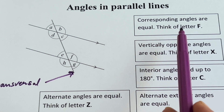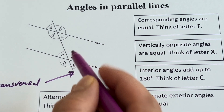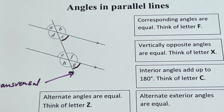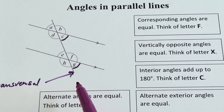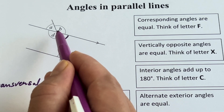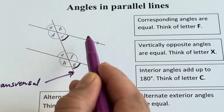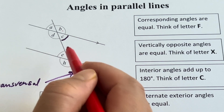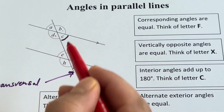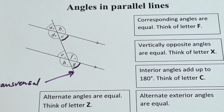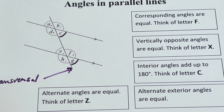Think of the letter F. If you look at angle C and angle G, they are corresponding angles. I will run my pencil over it so you can visualize the letter F. There are other corresponding angles: B and F are corresponding, D and H are corresponding, and A and E are corresponding. There are four pairs of corresponding angles.